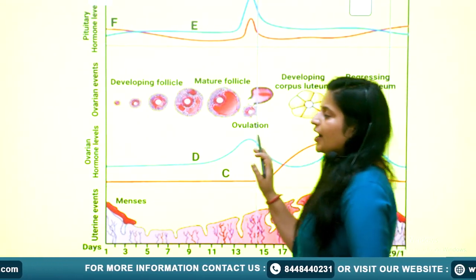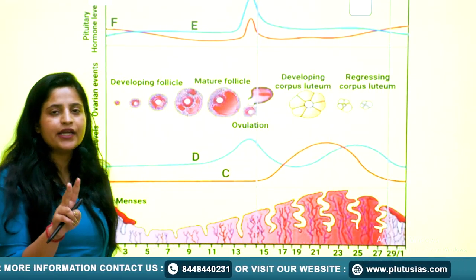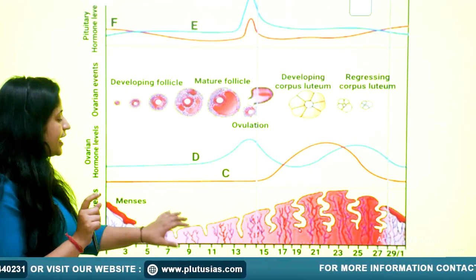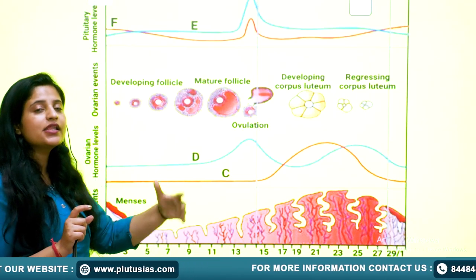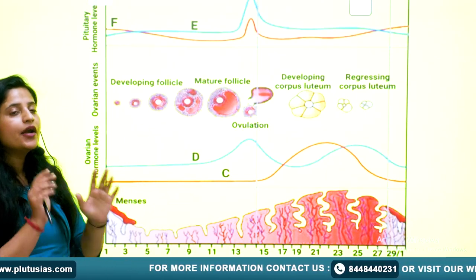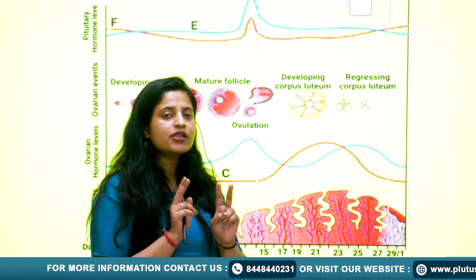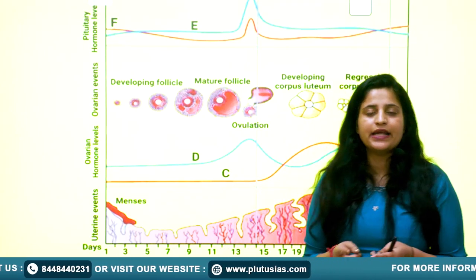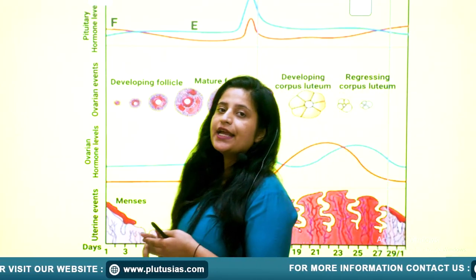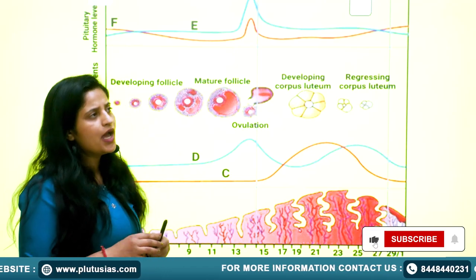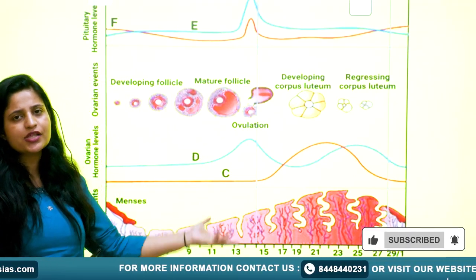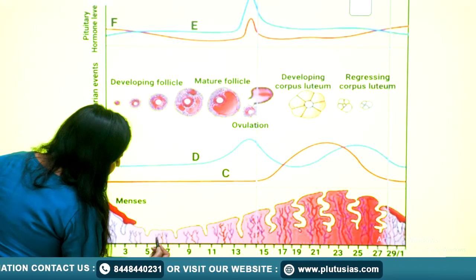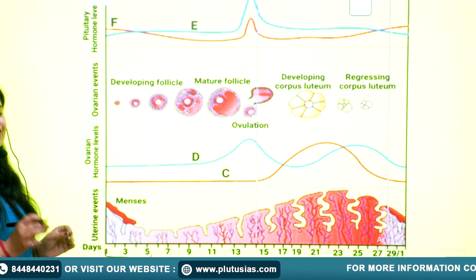Looking at the chart, there are two main events during the menstrual cycle: one takes place in the uterus and the second takes place in the female ovary. Hormone influences are also going on. The first 1 to 5 days are the menstruation phase.